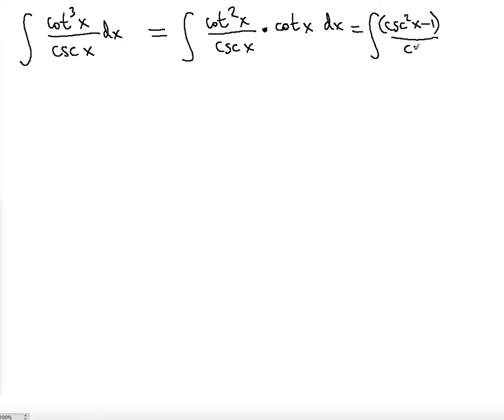So we're gonna have cosecant squared x minus one divided by cosecant x multiplied by cotangent x dx. Why am I doing this? I'm doing this so that I get rid of this troublesome cotangent squared because there's nothing we can do with it. If we let everything be in terms of the cosecant other than this part here, then it will be easy to use the substitution.